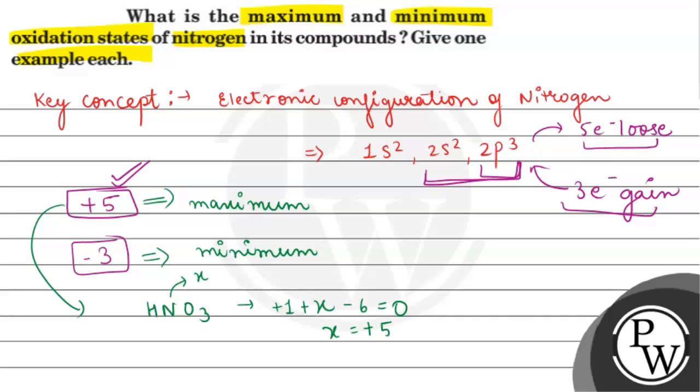And if we look at -3 for example, then what will happen? NH₃. The oxidation state of nitrogen over here, with hydrogen being +1 for each, means the oxidation state of nitrogen is -3.